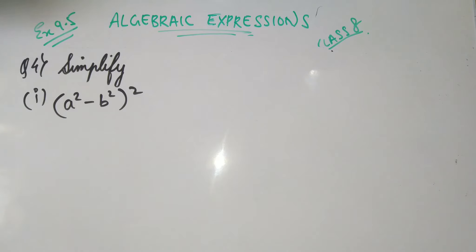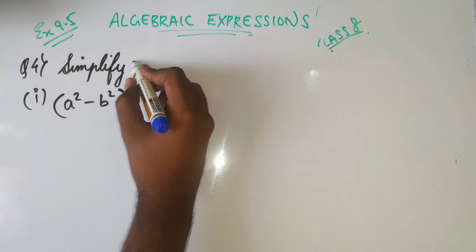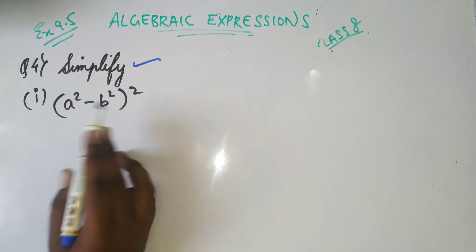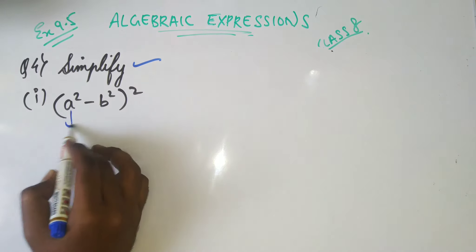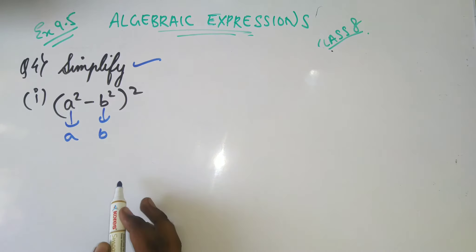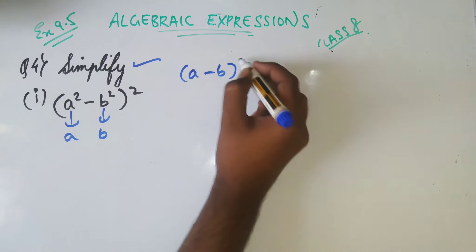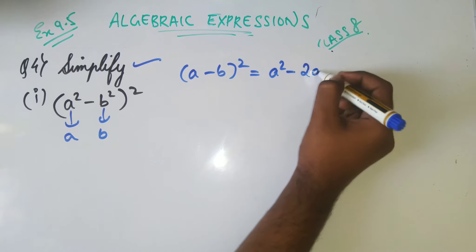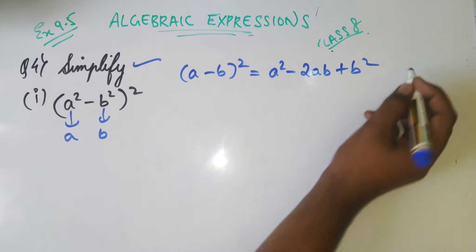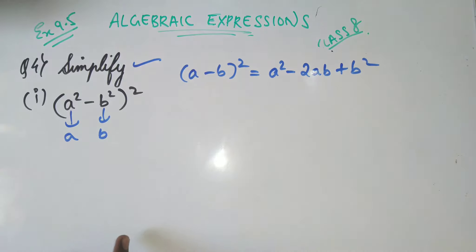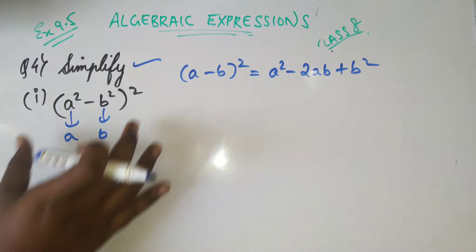We are moving on to the fourth question. Here I have taken the first part. You have to simplify this — it is basically (a - b) whole square, but the thing is that a squared will be a and b squared will be b. I have to apply the formula: (a - b)² = a² - 2ab + b². Always write the identity beside whatever steps you are doing.